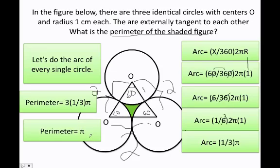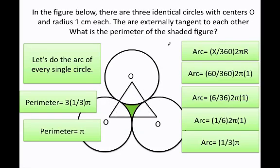Moreover, if you add 1/3 plus 1/3 plus 1/3, that's just 1. So the perimeter of the shaded figure is π. This is a classic problem — let's go ahead and do another one.